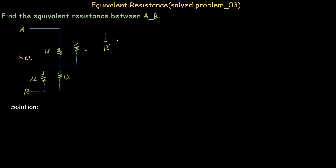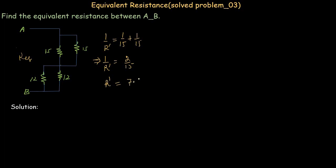The equivalent resistance of the first pair of parallel resistors: 1 divided by R' equals 1 divided by 15 plus 1 divided by 15. So 1 divided by R' equals 2 divided by 15, which gives R' equals 7.5 ohms.